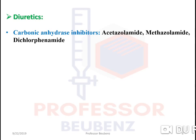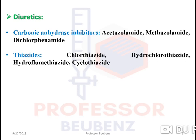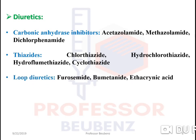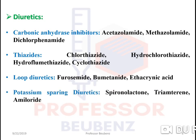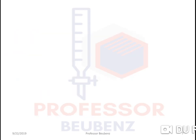The last class is diuretics, which is most important. Diuretics are further subclassified as: carbonic anhydrase inhibitors (e.g., acetazolamide, methazolamide); thiazides (e.g., chlorothiazide, hydrochlorothiazide); loop diuretics (e.g., furosemide, bumetanide); potassium-sparing diuretics (e.g., spironolactone); and osmotic diuretics (e.g., mannitol). We will see each one by one.